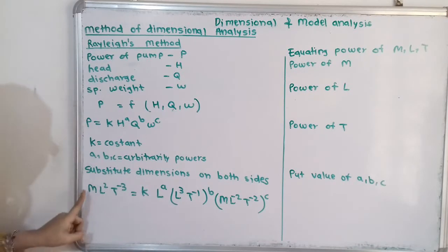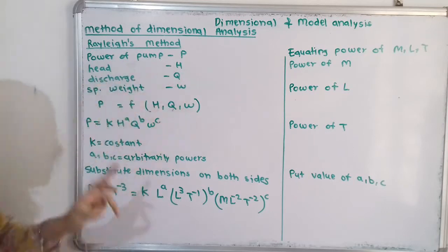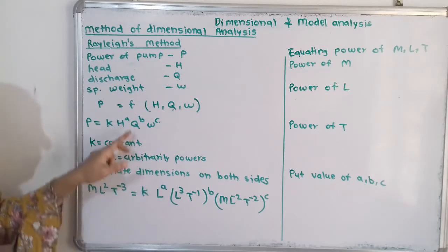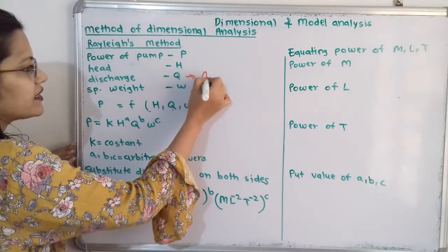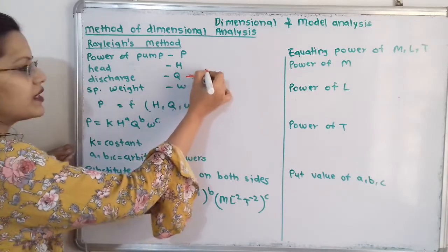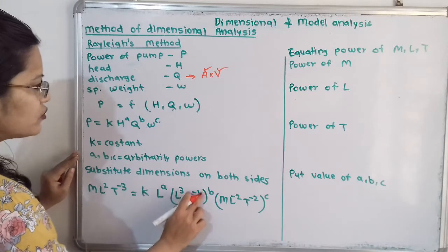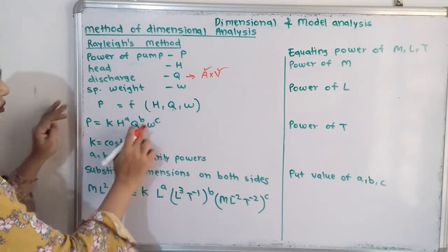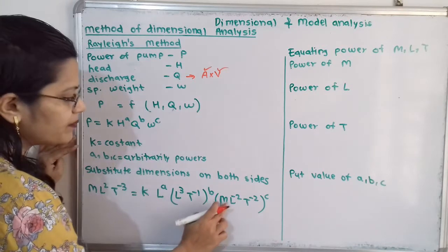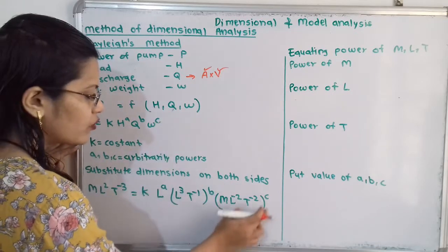So we write M·L²·T⁻³ = K · (L)^A · (L³·T⁻¹)^B · (M·L⁻²·T⁻²)^C. Here H is head, so its dimension is L. Discharge Q is area times velocity, giving L³·T⁻¹. Specific weight W has dimensions M·L⁻²·T⁻².